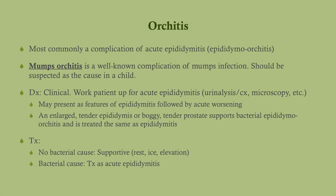Orchitis is usually a complication of epididymitis — think of it as an ascending infection. Mumps is a notable cause of orchitis, though less common; consider it in an unvaccinated child with parotitis and the classic 'gopher cheek' appearance. This is a clinical diagnosis, but work them up for acute epididymitis since the two often occur together — called epididymo-orchitis. When infection reaches the testicles it will hurt even worse, causing an acute worsening. Treatment for a bacterial cause is the same as for epididymitis; if there's no bacterial cause, treatment is supportive: rest, ice, and elevation.